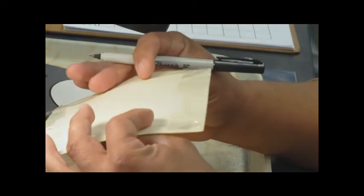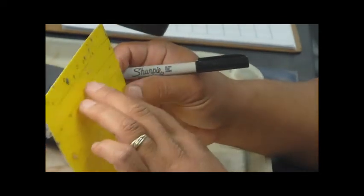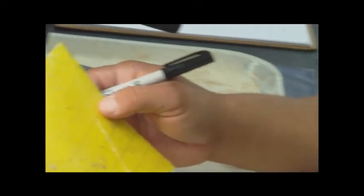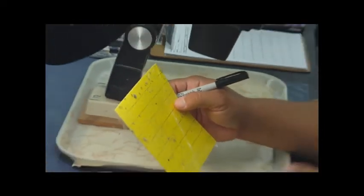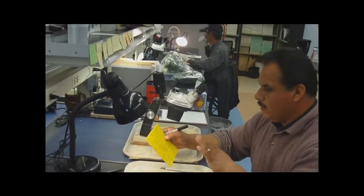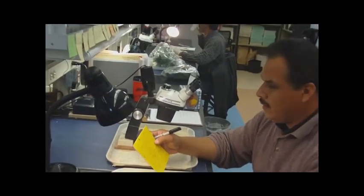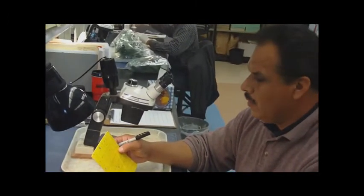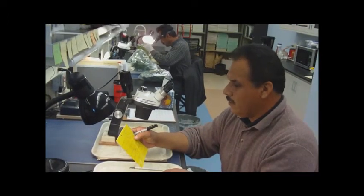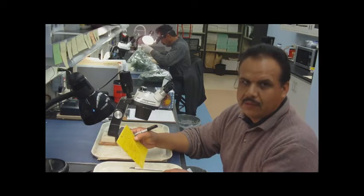And then once we've done that, we'll get an actual count of the total thrips adults and larvae on this trap. And then once we've done all the trials, we'll summarize the data. And then from there we'll go ahead and see our efficacy on the thrips counts.